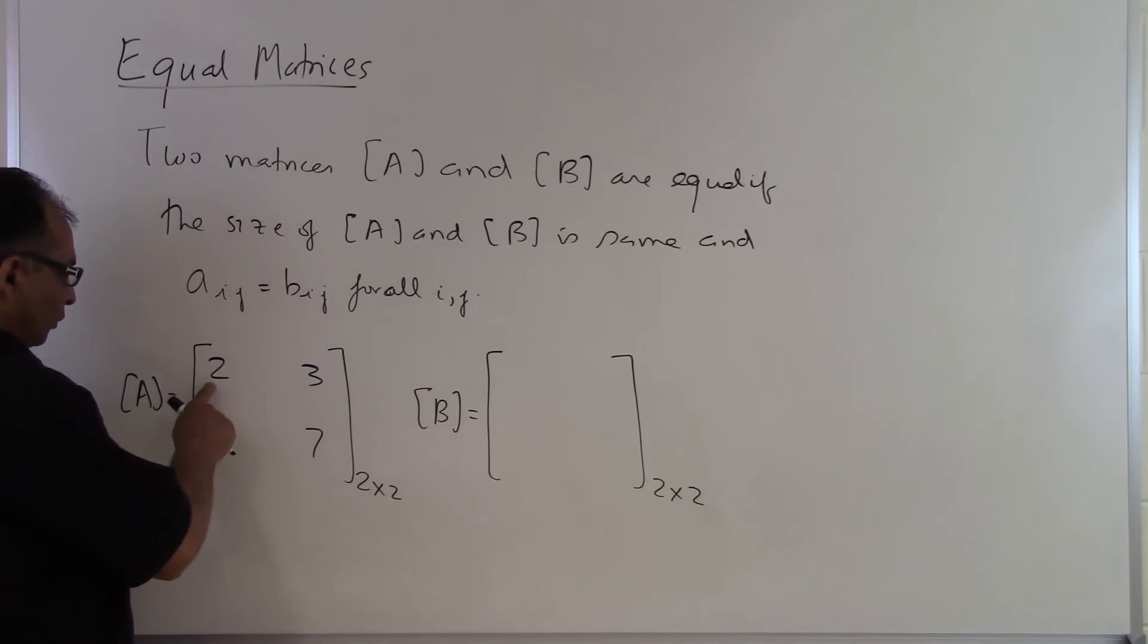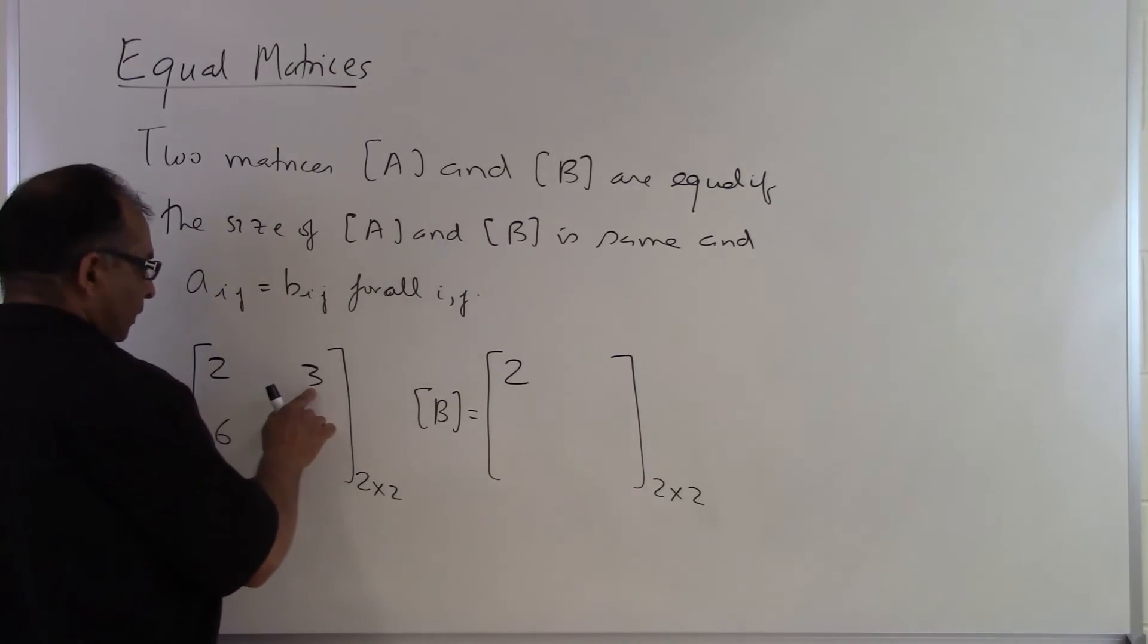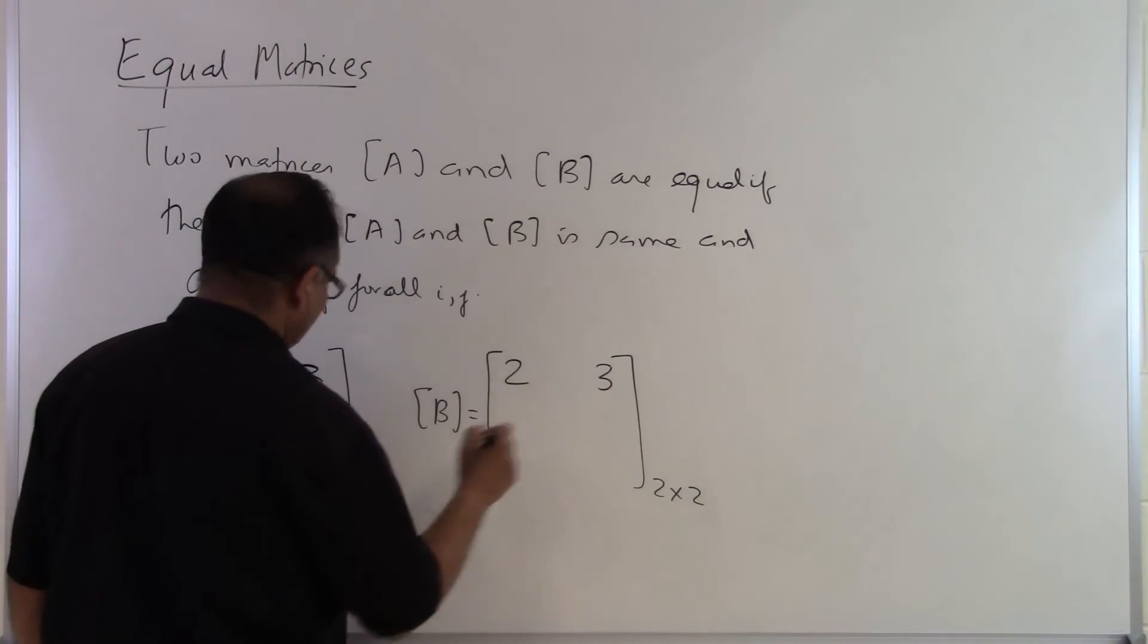So this is A sub 1 1. This is first row first column. Has the same as the first row first column here. So this has to be 2. Then this one is first row second column. So this has to be 3.